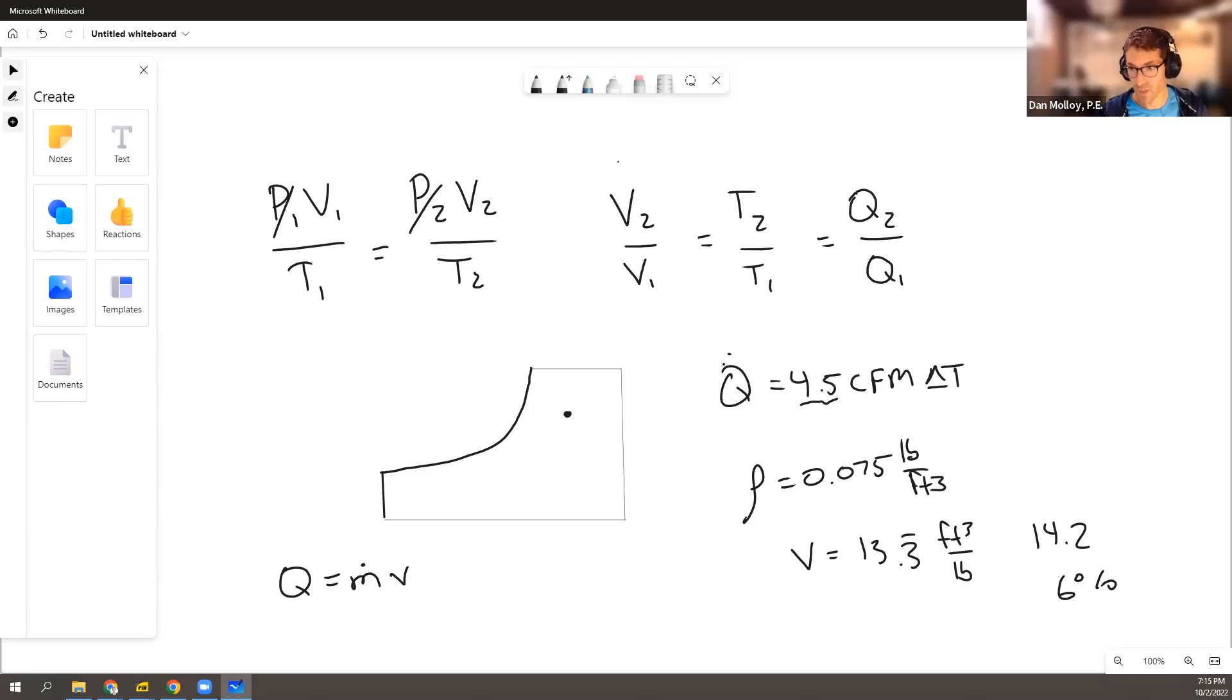then the volume is going to be 6% bigger. So if we use 14.2, we'll get an answer that's 6% higher than if we use the rule of thumb.